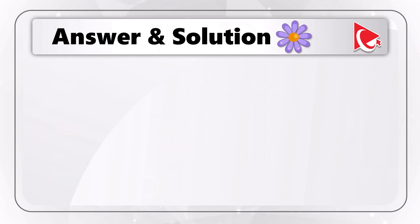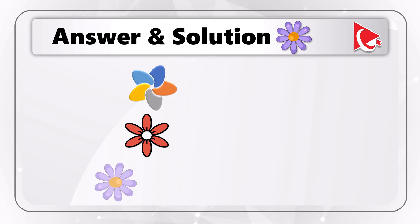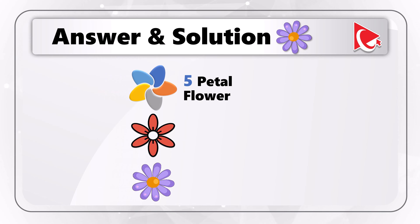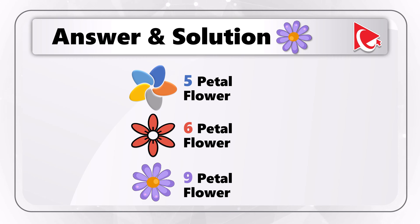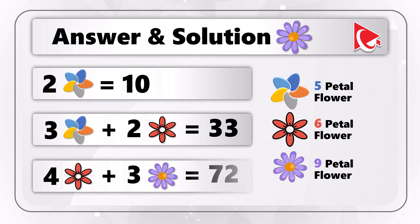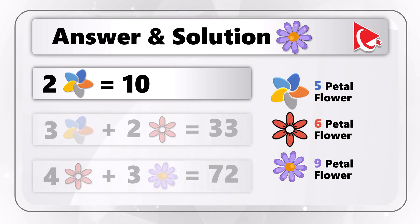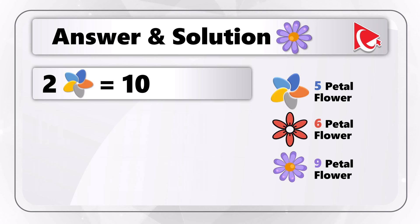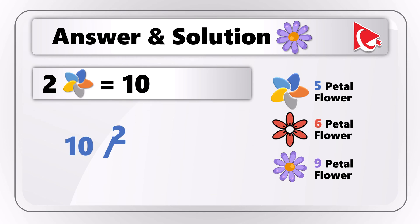As you might have figured out, we have three types of flowers: the five-petal flower, the six-petal flower, and the nine-petal flower. Let's first calculate the value of the five-petal flower. Based on the original expression, we can calculate it as 10 divided by 2, which equals 5.